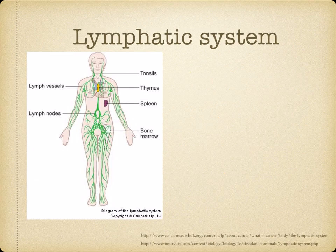Lymph is carried in the lymphatic system, which is made up of capillaries that resemble blood capillaries. These merge into larger vessels that form a network around the body. The lymph vessels drain their contents back into the bloodstream, joining at a vein called the subclavian vein, which sits just under your collarbone — this is where lymph is returned to the blood.